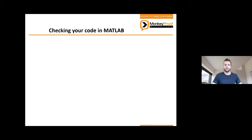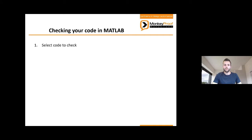Some IDEs such as Visual Studio Code can warn you about violating coding standards for other languages. In MATLAB we have the code analyzer, but it only takes you so far, so we wanted a bit more than that. For this reason we've developed the Code Checker for MATLAB. The way it works is: first you select what code to check — this can be a file, multiple files, maybe a folder, or even a MATLAB project. Then you select what checks to run.